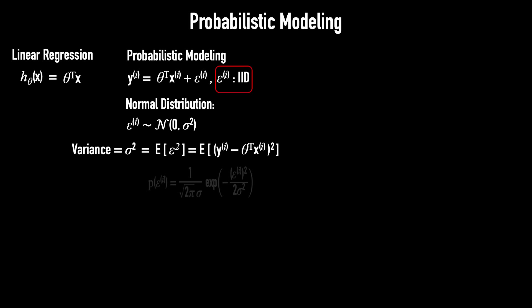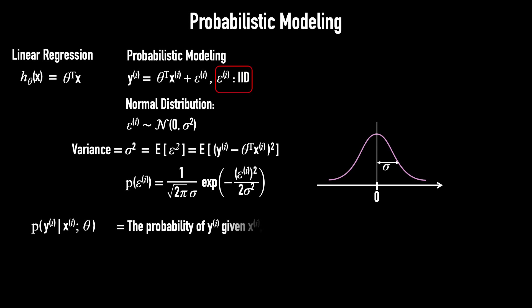The normal distribution is defined by this exponential formula. It appears as a smooth, bell-shaped curve. In standard notation, we write p(yᵢ|xᵢ; θ). This represents the probability of yᵢ given xᵢ, parameterized by θ.